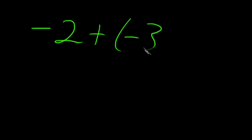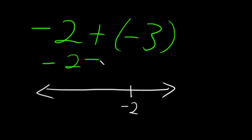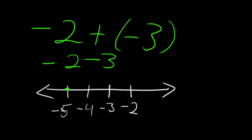Now what if we start with a negative number and add another negative number? We'll use a number line. If negative 2 is here, adding a negative 3 is equivalent to subtracting, so really it looks like negative 2 minus 3, and we need to go to the left by 3. Counting 1, 2, 3 to the left, and going through negative 3, negative 4, negative 5 — our answer is negative 5.